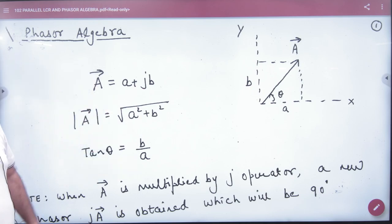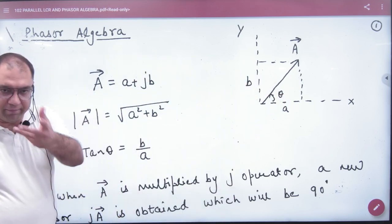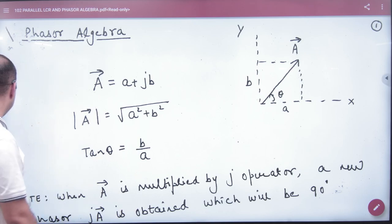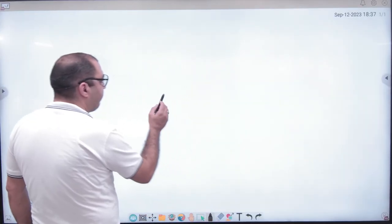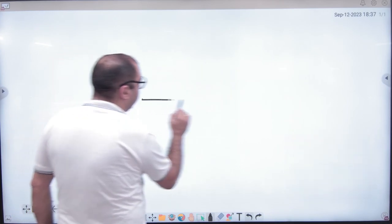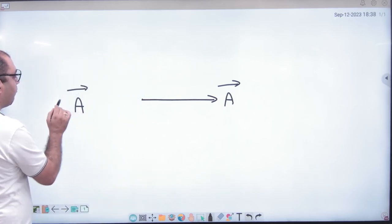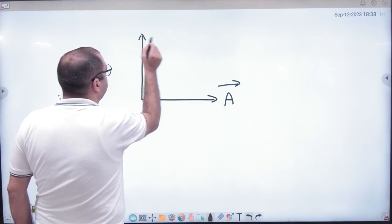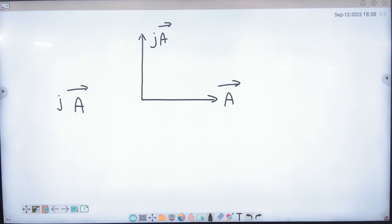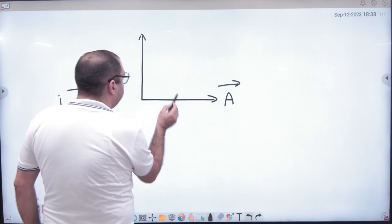So if A is here, then B is 90 degree ahead. For example, you have a vector A. If I multiply A vector by J, what do I get? J operator, not j cap. It is only J. This means a new vector will be here, which is 90 degrees ahead.